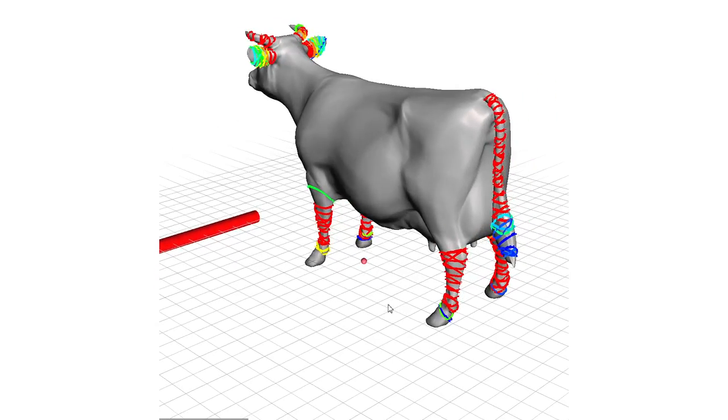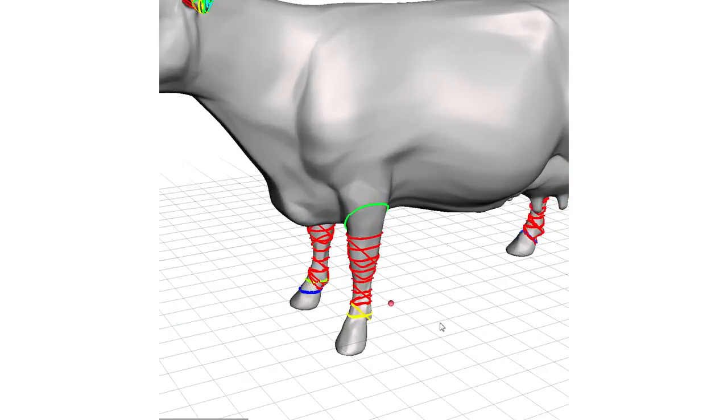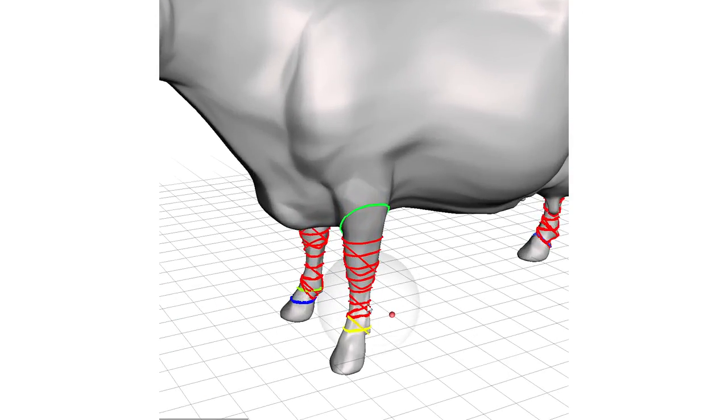In this clip, we see that the cow has many weak areas. Using a 3D sculpting brush, we can thicken those areas which will result in a stronger print. The interactive feedback allows the user to immediately see the effects of small changes.